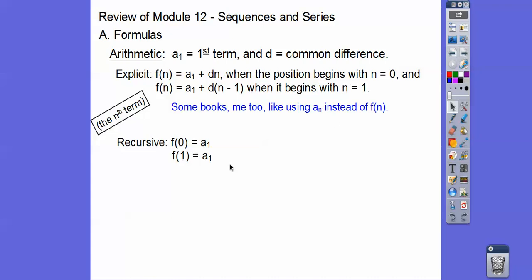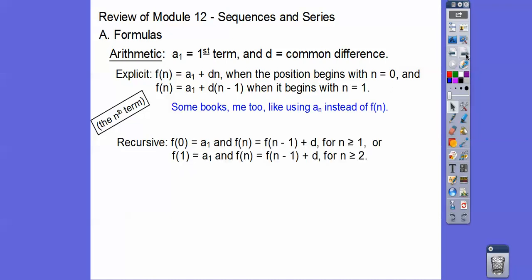The recursive formula always starts with the first term. If n starts with 0, then f(0) = a sub 1, or f(1) = a sub 1. The formula is f(n) = f(n−1) + d — f(n−1) is the term before f(n). If it starts with 0, the recursive formula begins at n=1; if it starts with 1, it begins at n=2.